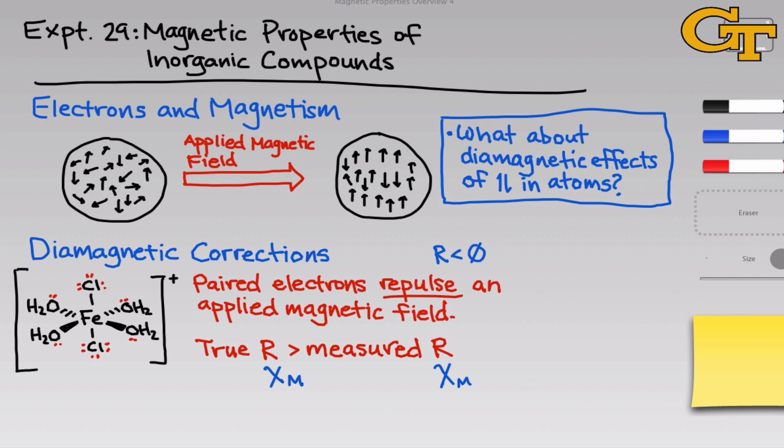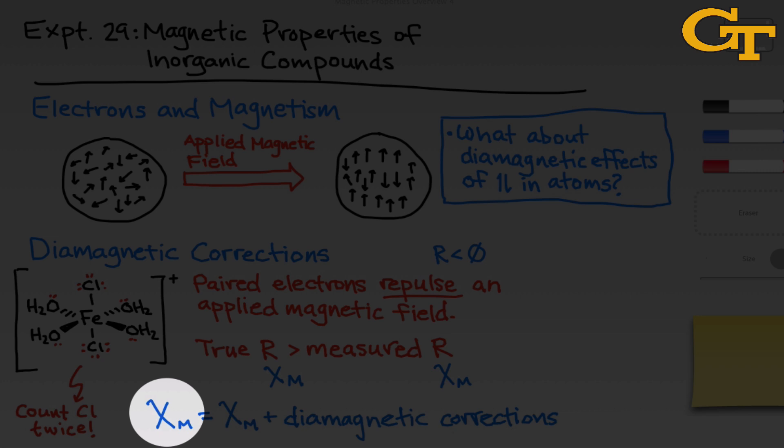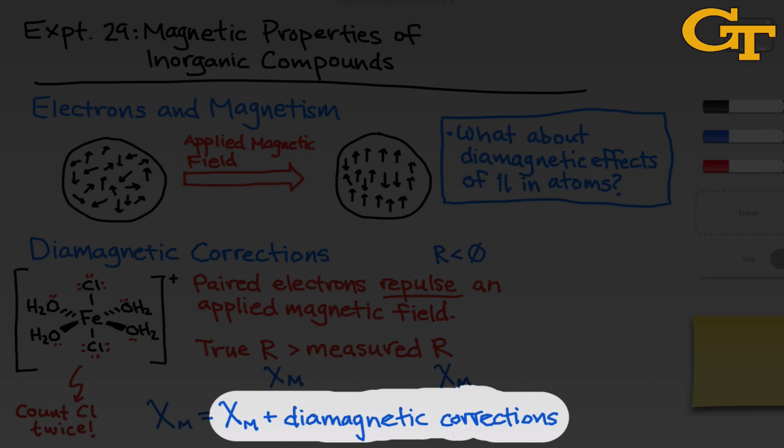We need to account for the diamagnetism of all the atoms in the complex, including the metal ion. But conveniently, values for metal ions and for ligands have been tabulated for these diamagnetic effects. All we really need to do is find the metal ion of interest, here it's iron three plus, and find all of the ligands, Cl minus and water, and add up their diamagnetic contributions, where we're careful to count everything. The molar magnetic susceptibility due only to the unpaired electrons is equal to the measured molar magnetic susceptibility plus any diamagnetic corrections.